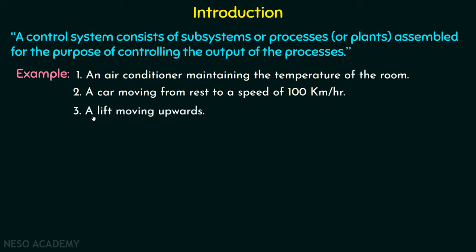Example three: a lift moving upwards. In this case, the lift is the control system and the desired floor of the building is the desired output. So all these are control systems controlling their respective outputs.